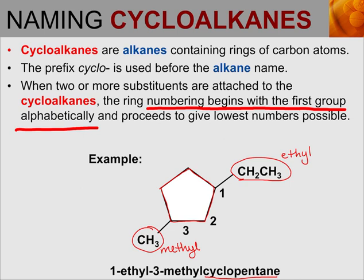We're going to start numbering at the group that comes first alphabetically. Ethyl starts with an E, methyl starts with an M, so we start numbering at the ethyl group — that's position one. Then we decide whether to go clockwise or counterclockwise, making sure the other group has the lowest number possible. We go clockwise so the methyl group is at position three. If we had gone the other way, methyl would be at position four, which is not the lowest. So the full name is 1-ethyl-3-methylcyclopentane.